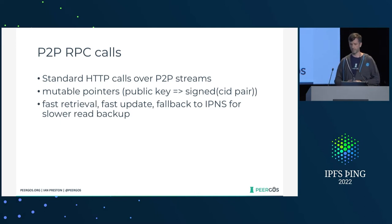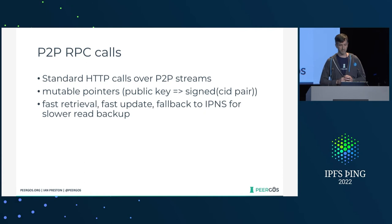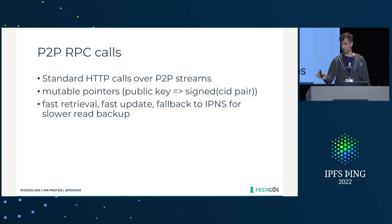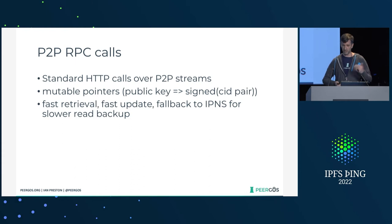You need to get a mutable pointer. In our case, a mutable pointer is a mapping from a public key to a signed pair of CIDs. You get this with a peer-to-peer RPC call — standard HTTP calls over peer-to-peer streams. This is an undersold feature of IPFS: you can totally avoid any dependency on DNS or the TLS certificate authorities. You just say, I want to dial this node by public key and send whatever you want. This gives us fast retrieval, fast remote updates. But you could still fall back to actual IPNS for a slower read backup if your server was offline.